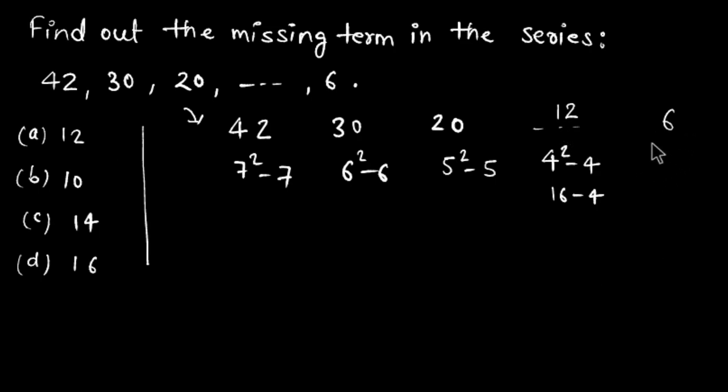Again I check this term also. So it is like 3 squared minus 3, so it is like 9 minus 3. 9 minus 3 is 6. So we can easily say the missing term is 12.